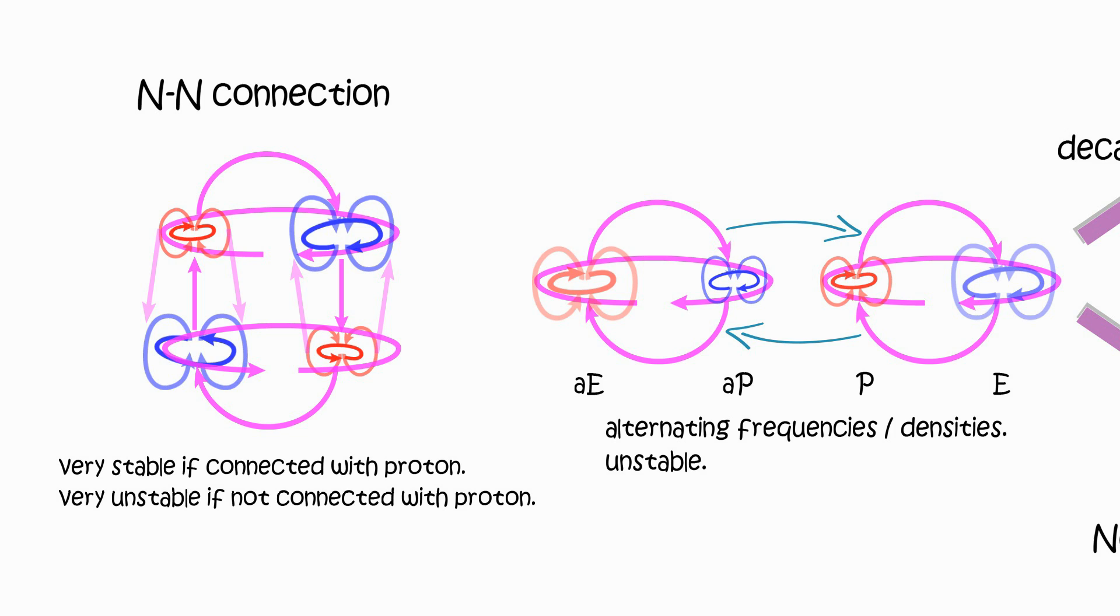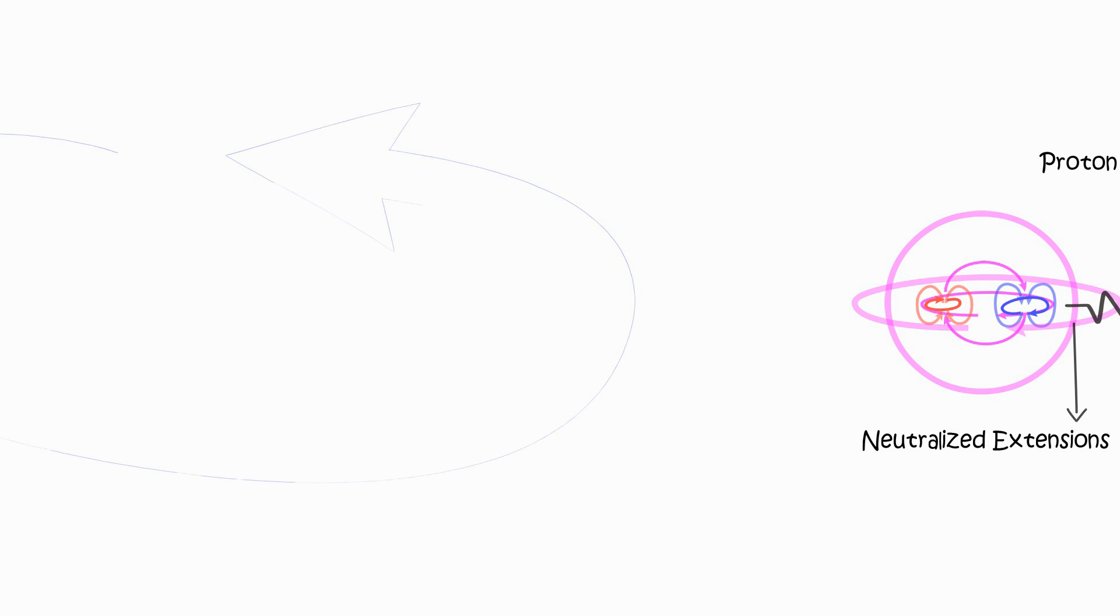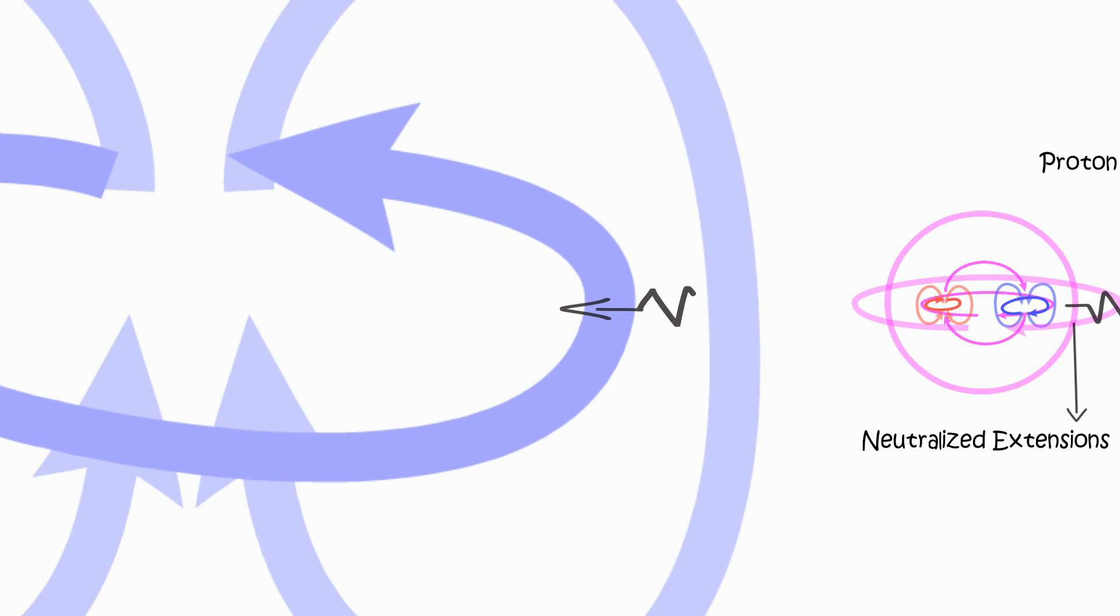Electron cannot connect to N proton because electron is too dispersed, and cannot focus enough to detect N proton.